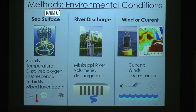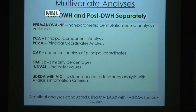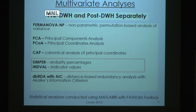In conjunction with that, I had an environmental dataset. The sea surface parameters were collected at the same time as the zooplankton samples, and I augmented that dataset with river discharge from USGS and wind and current data from NOAA buoys, residual products, and satellite data. I assessed each dataset using Euclidean distances on un-normalized data for the environment, and Bray-Curtis dissimilarity on fourth-root transformed zooplankton abundances. I used a variety of multivariate tests: some looked at total variability such as PCoA and PCA, and some looked at differences between groups such as PERMANOVA and CAP.